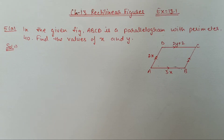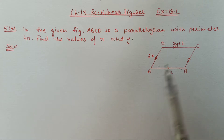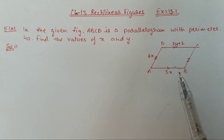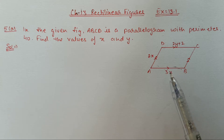Hello students, we are doing Chapter 13, Rectilinear Figures, Exercise 13.1. In the previous video we completed up to question number 4. Now we are starting from question number 5, first part. In the given figure, ABCD is a parallelogram with perimeter 40. Find the value of X and Y. The figure is given and the perimeter is also given, so we have to find out the values of X and Y.